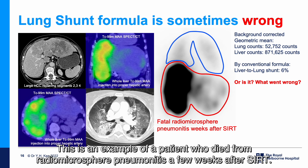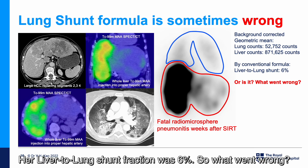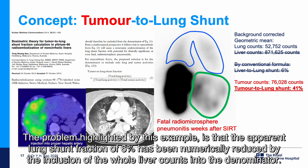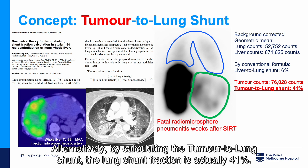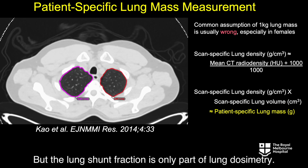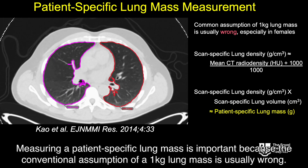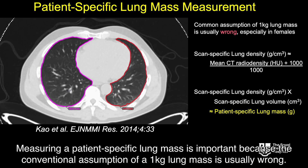This is an example of a patient who died from radiomicrosphere pneumonitis a few weeks after SIRT. Her liver-lung shunt fraction was 6%. The problem is that the apparent lung shunt fraction of 6% has been numerically reduced by the inclusion of the whole liver counts into the denominator. By calculating the tumour-to-lung shunt instead, the lung shunt fraction is actually 41%. Furthermore, measuring a patient-specific lung mass is important because the conventional assumption of a 1 kg lung mass is usually wrong.